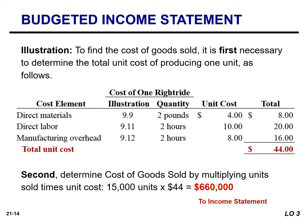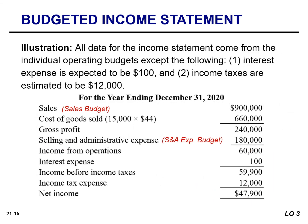Again, we are going to need the cost of goods sold when we prepare the income statement. All data for the multiple-step income statement come from the individual operating budgets except for the following items: we expect interest expense to be $100 and our income taxes are estimated to be $12,000.